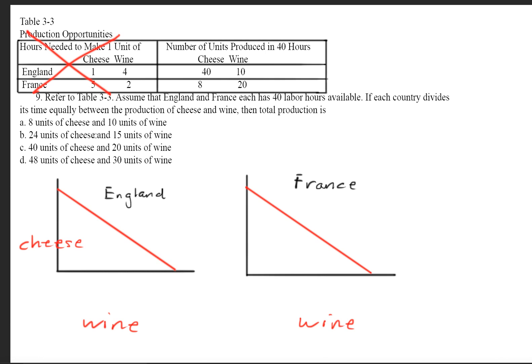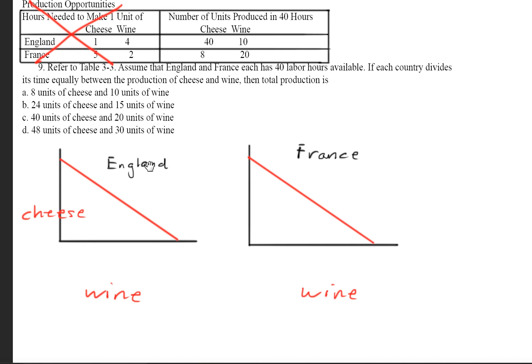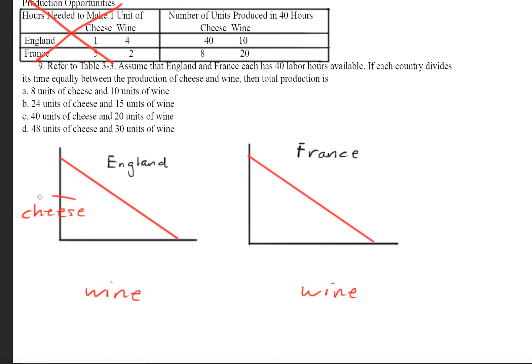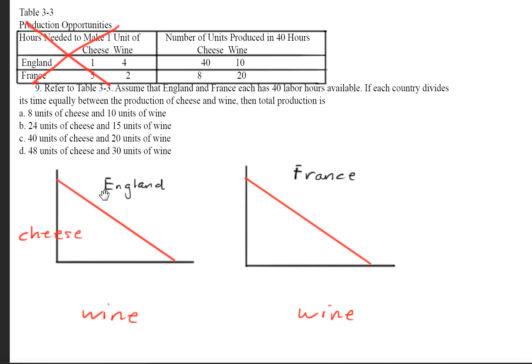And we begin by drawing our production possibilities frontier for both countries. So the way I have it set up here is on the y-axis, we're going to have cheese, which is going to correspond over here as well. And on the x-axis, we have wine. So now that we labeled our axes, we're going to define the points here.